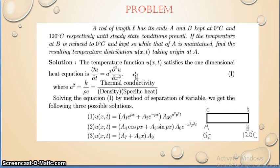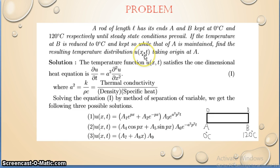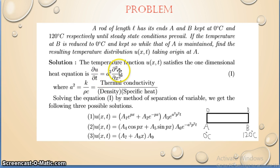Problem 1: A rod of length L has its ends A and B kept at 0°C and 120°C respectively. The temperature at B is then reduced to 0°C and kept so. Find the resulting temperature distribution u(x,t), taking origin at A. The rod spans from 0 to L; A is at 0°C and B is at 120°C. The one-dimensional heat equation is ∂u/∂t = a²∂²u/∂x². The correct solution is u(x,t) = (A₄cos(px) + A₅sin(px))·A₆e^(-a²p²t).